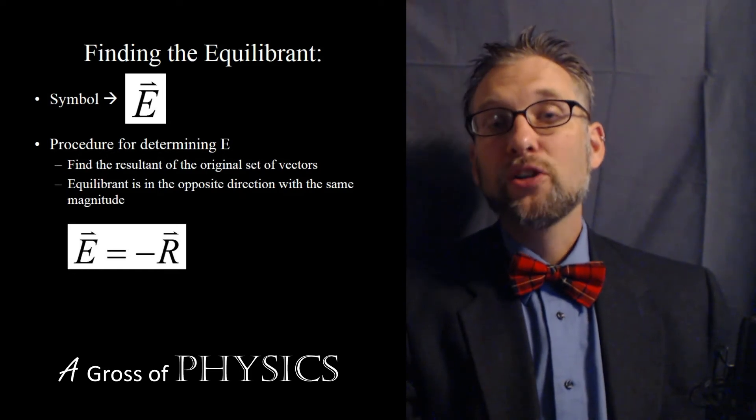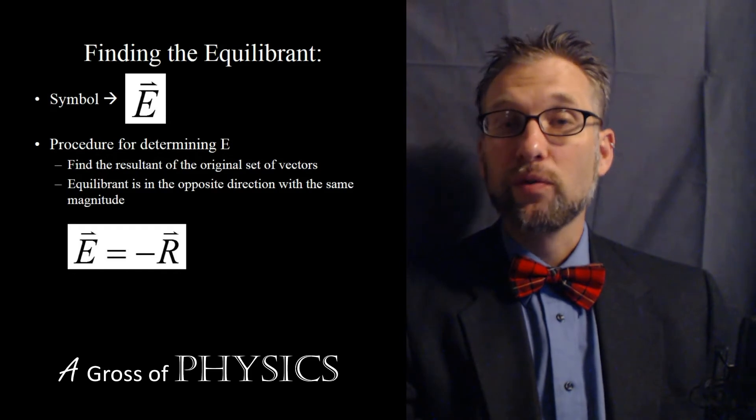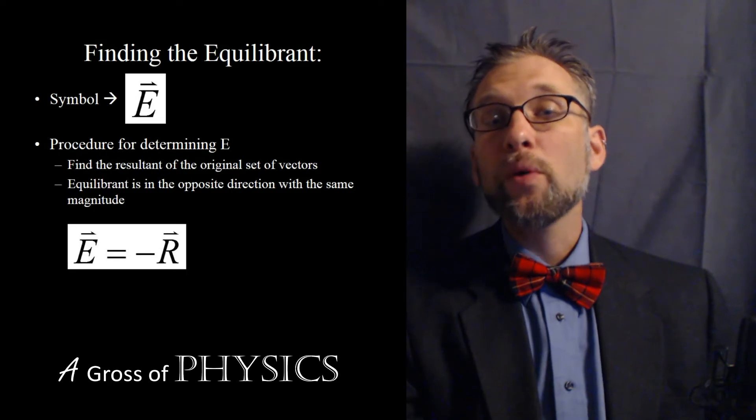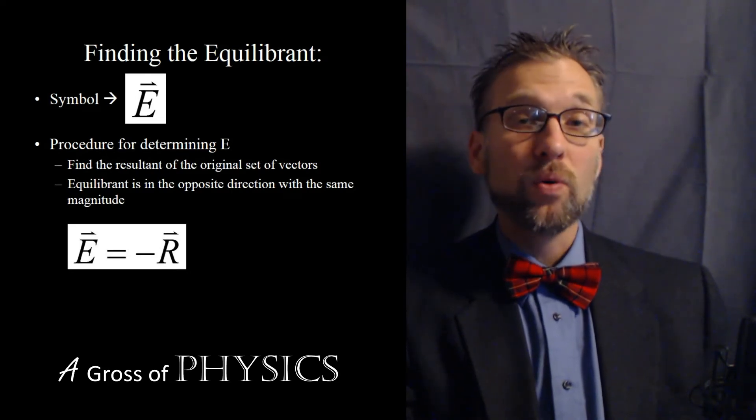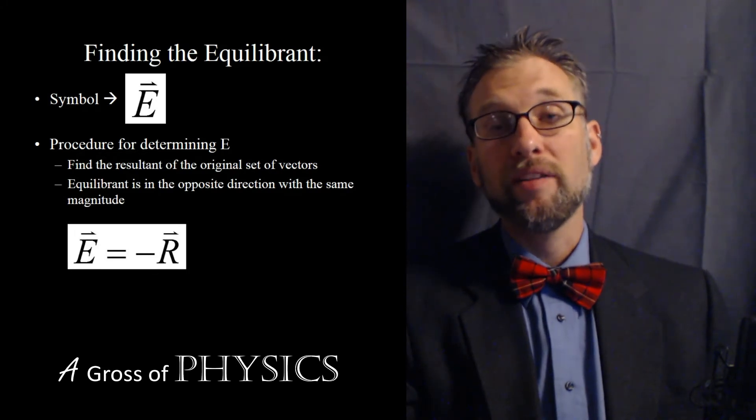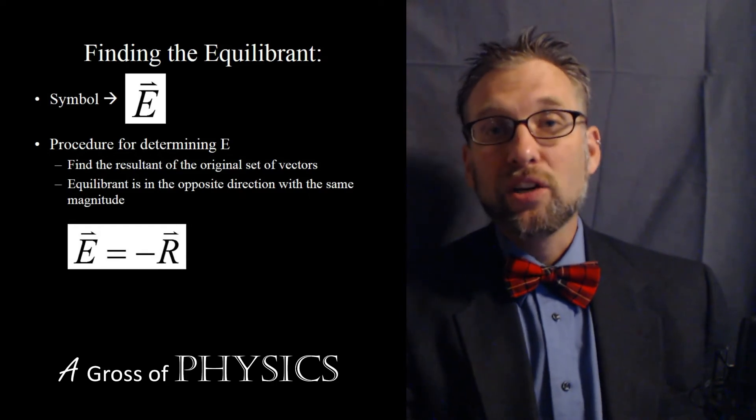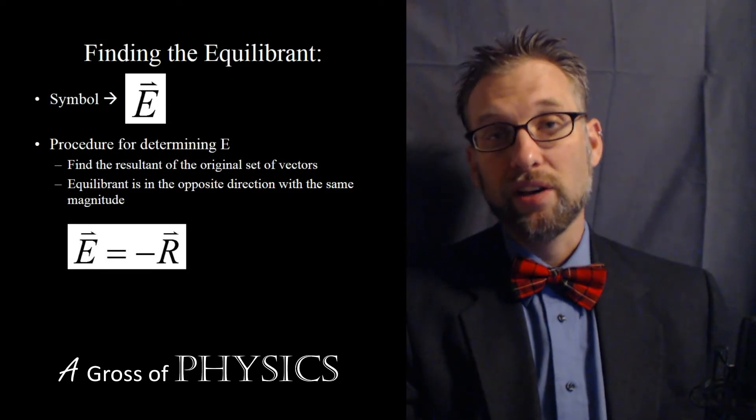If we remember, 180 degrees is half of a circle. So if you're talking about 0 to 360, the opposite of 0 is 180. So no matter where we are in the xy coordinate system, we can just either add or subtract 180 to that number, and that would allow us to find the equilibrium. So in the case of 90 degrees, if that's our resultant, the equilibrium would be 270 degrees.